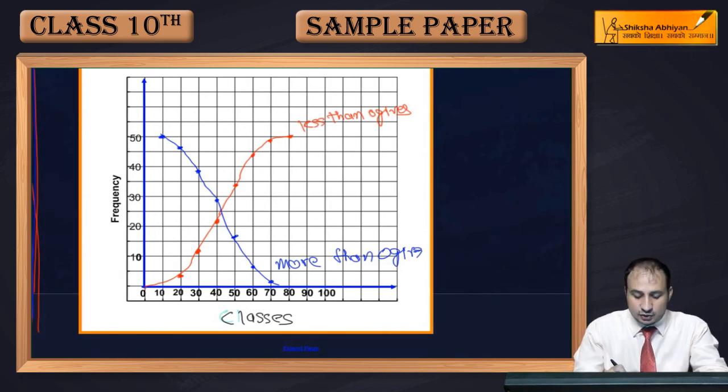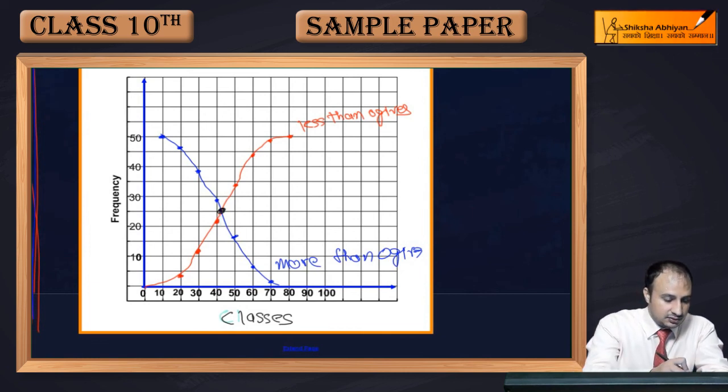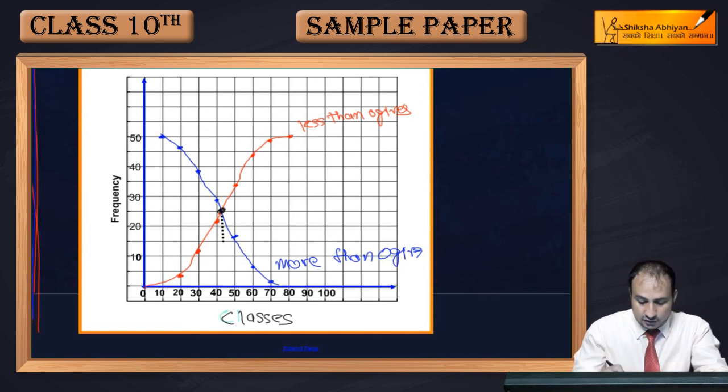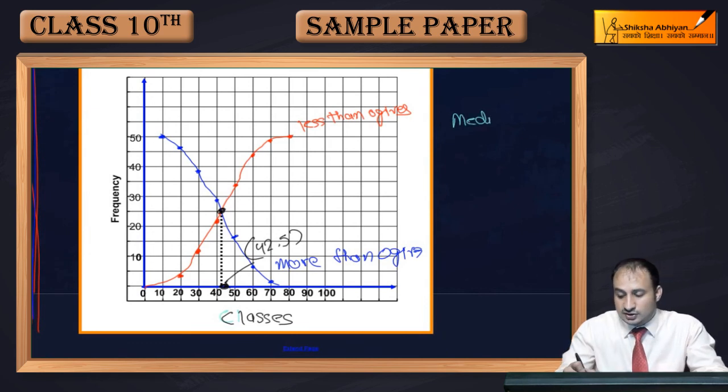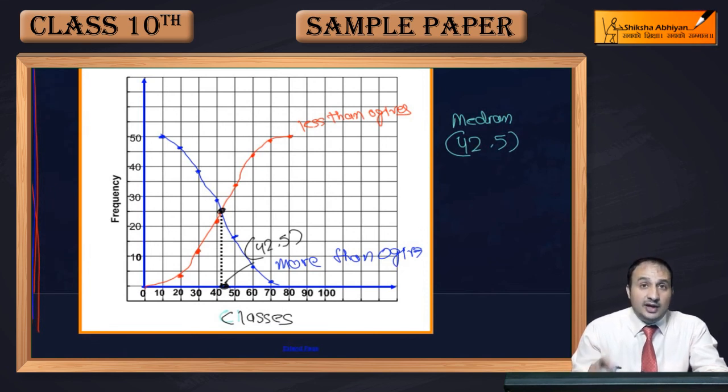Now you see, both are intersecting. Where both are intersecting, from the intersection, when you draw a line parallel downward, I'm drawing here with black in dotted form. The median is, median is 42.5, because the two lines intersect there, that x-coordinate value is the median.